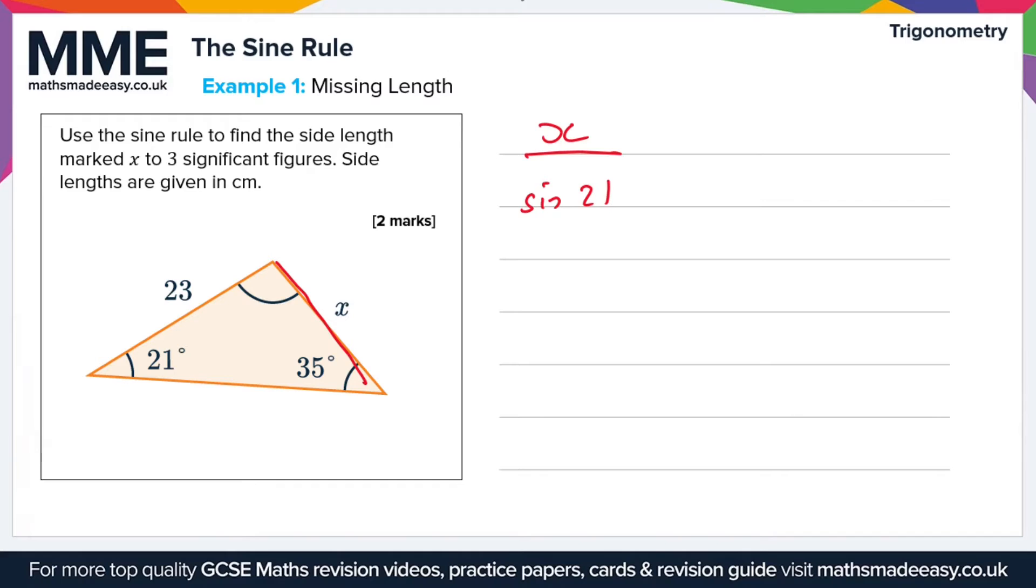This angle of 21 degrees is opposite the side X, so it goes underneath X on the fraction. That's going to be equal to 23, our other side length, divided by sine 35. That's the angle opposite the side length of 23 centimeters.